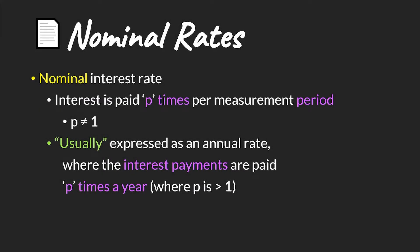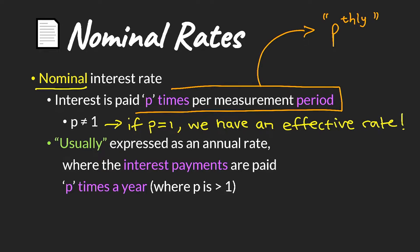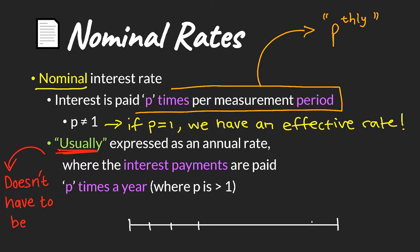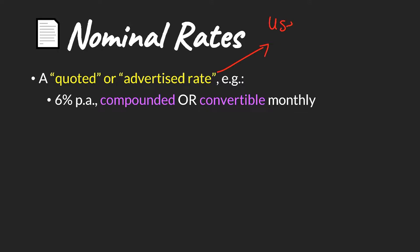Let's look at nominal rates. A nominal interest rate is where the interest is paid p times per measurement period, or it's paid pthly. So we need to be told what the measurement period is, and we know that it's going to be paid more than once a year or less than once a year. Because if it's paid once a year, then we just have an effective rate. Nominal rates are usually expressed as an annual rate with something per annum, and then you are told the number of interest payments per year or per period.